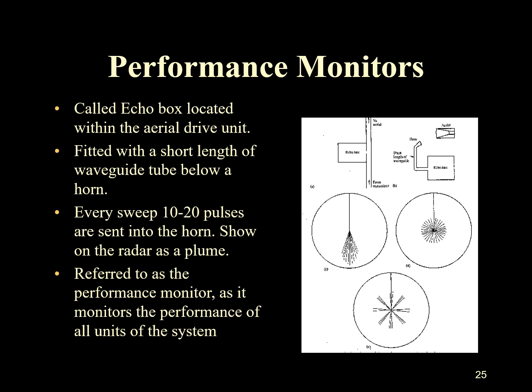Performance monitors, also called echo boxes, are located within the aerial drive unit. Fitted with a short length of waveguide tube below a horn, they send every sweep of 20 pulses into the horn and this shows on the radar as a plume. They are referred to as performance monitors because they monitor the performance of all units of the system.